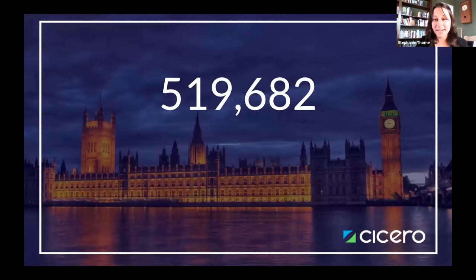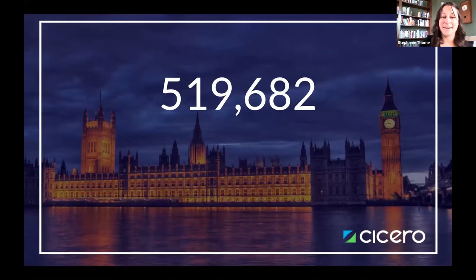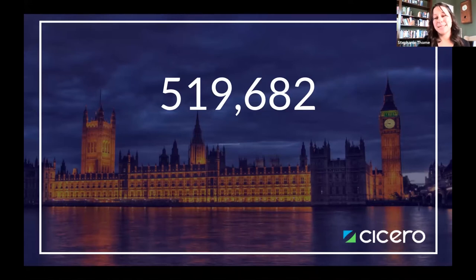I'll start with a number: 519,682. I was going to ask for a show of hands for anyone who knew what this number represented, but given that we are remote, I'll just tell you that this is the total estimated number of U.S. elected officials. That includes local municipal governments, towns and townships, counties, school boards, and special districts.